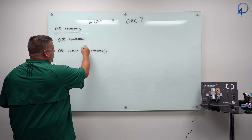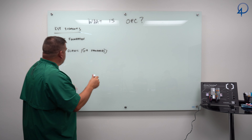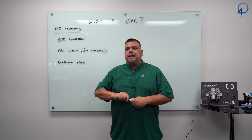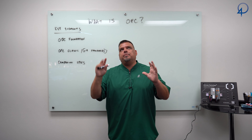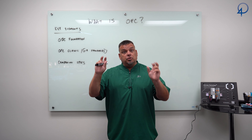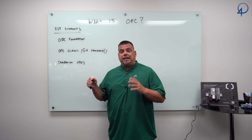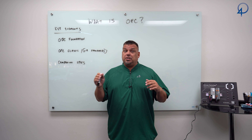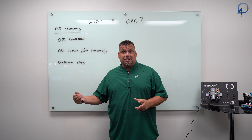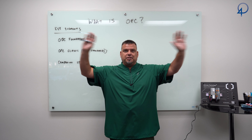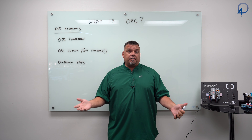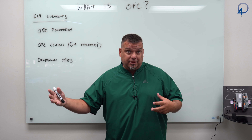The third piece is companion specs. Companion specifications are offshoots of the base standard that tell you how to organize data. The best way to define most companion specs is: it's a specification that tells you how to create a user-defined data type for a specific type of equipment. In OPC they call these information models, but they should really be called data models — hierarchical data models. The companion specs create those models. A CNC machine or a lathe would be a good example.